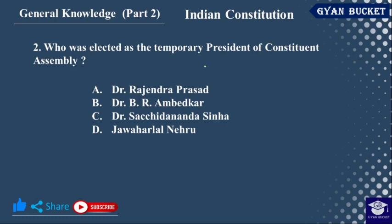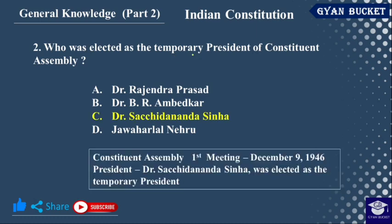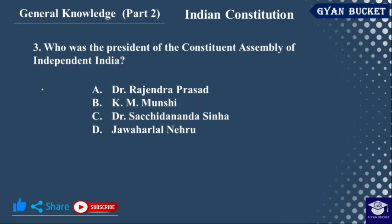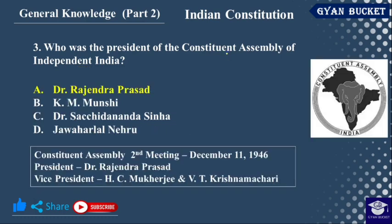Who was elected as the Temporary President of the Constituent Assembly? The temporary President of the Constituent Assembly was elected at the first meeting on December 9th, 1946. The second meeting elected the permanent President of the Constituent Assembly.